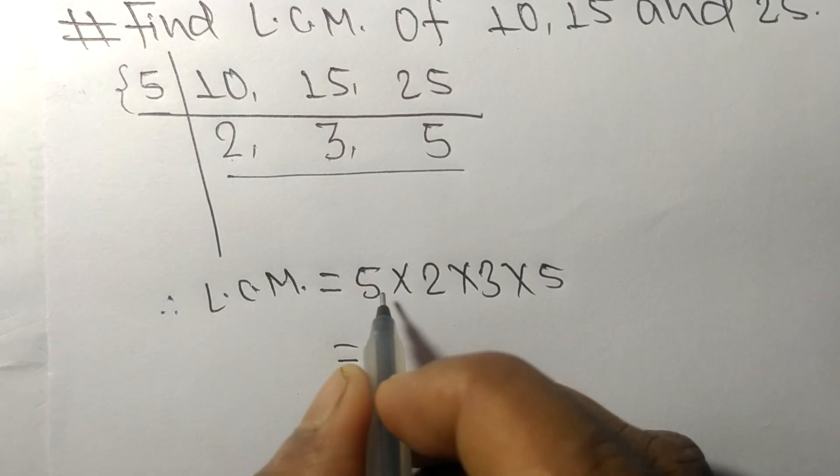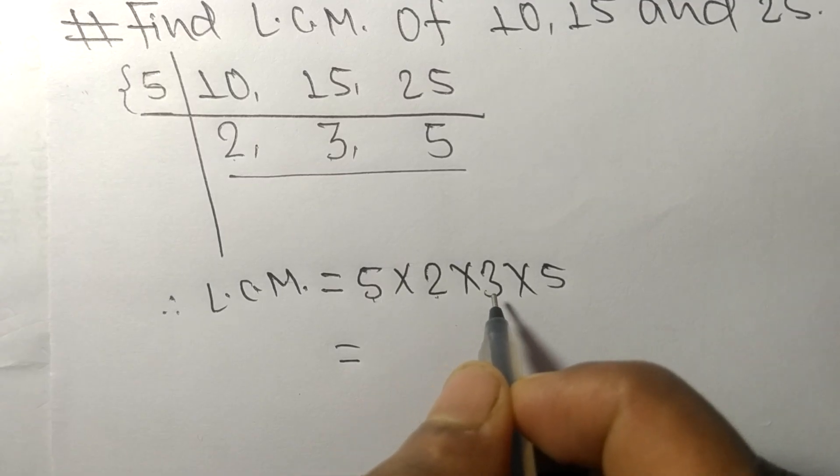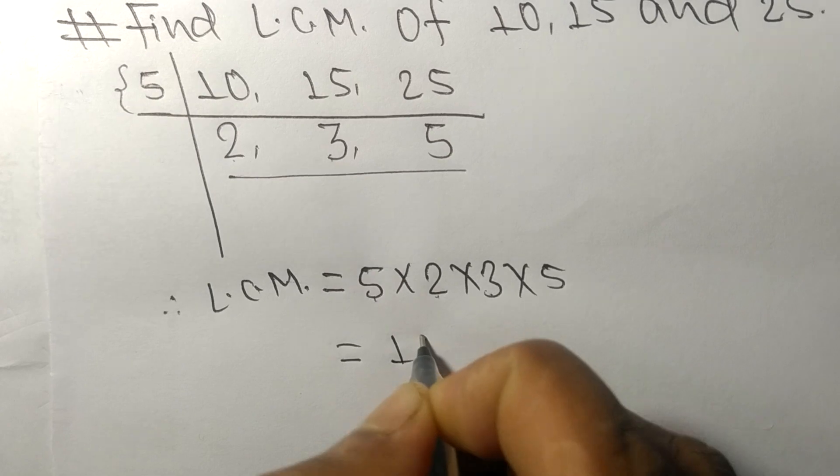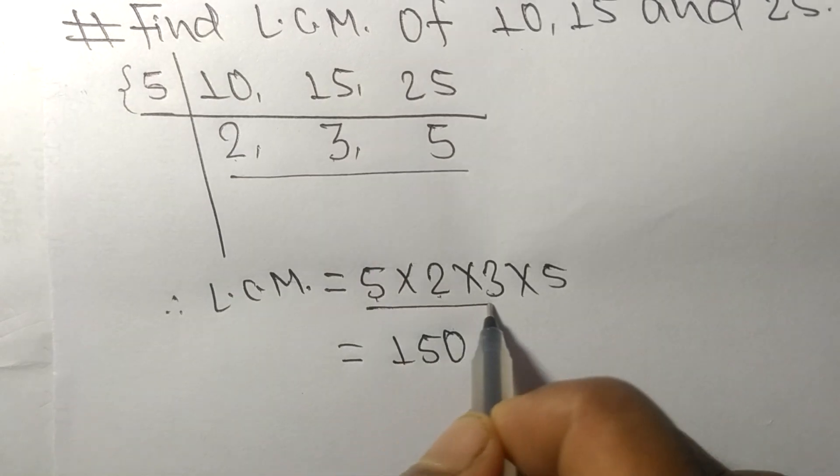So 5 times 2 means 10, 10 times 3 means 30, 30 times 5 means 150. So by multiplying all these numbers...